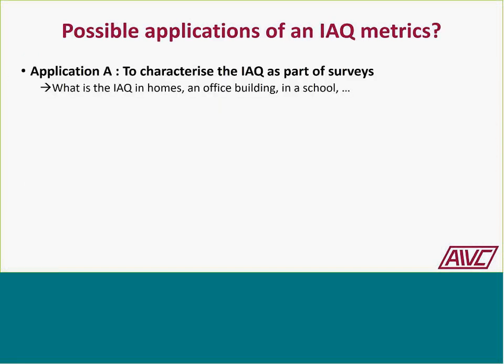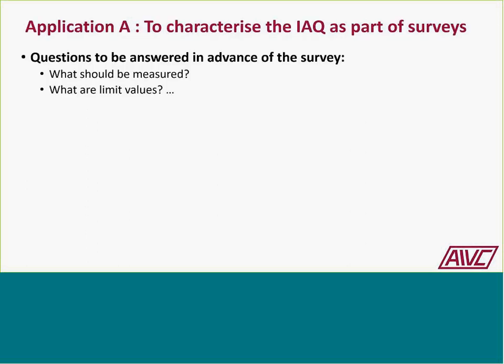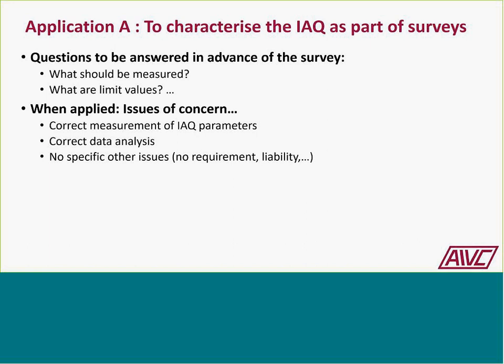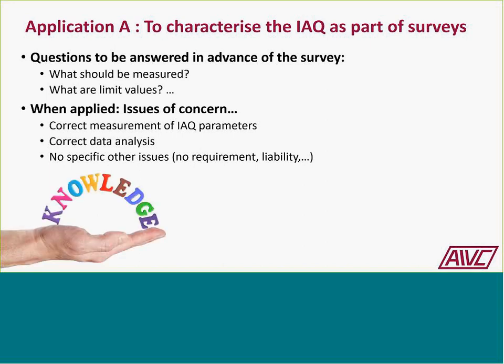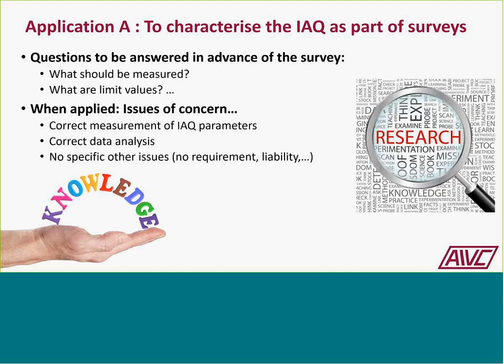Starting with possible applications of IAQ metrics: Application A involves characterizing indoor air quality as part of surveys—for example, what is the IAQ in homes, office buildings, or schools? Key questions to answer in advance include which variables to measure, what limit values apply, and how to correctly measure and analyze IAQ parameters. There are also liability issues to consider. This type of application is largely knowledge-focused, often part of a research project to better understand what is happening inside buildings.